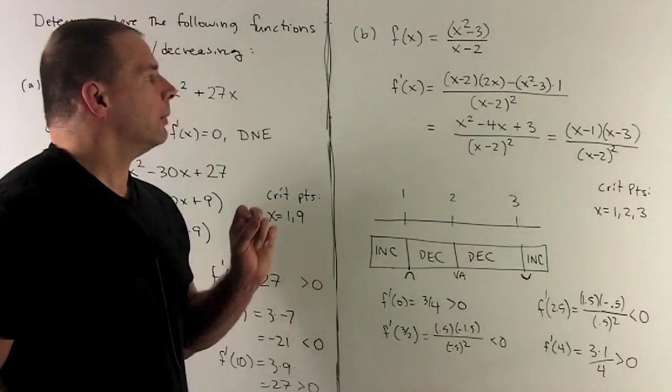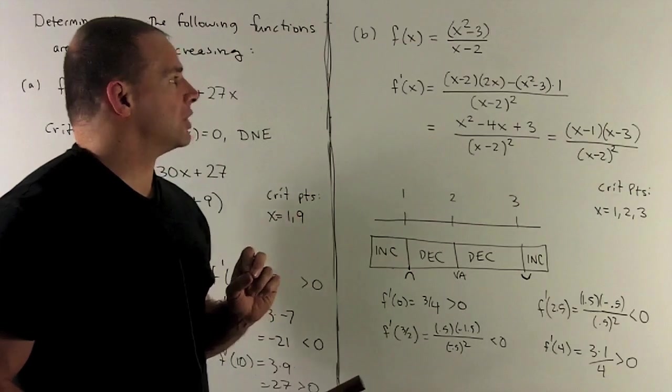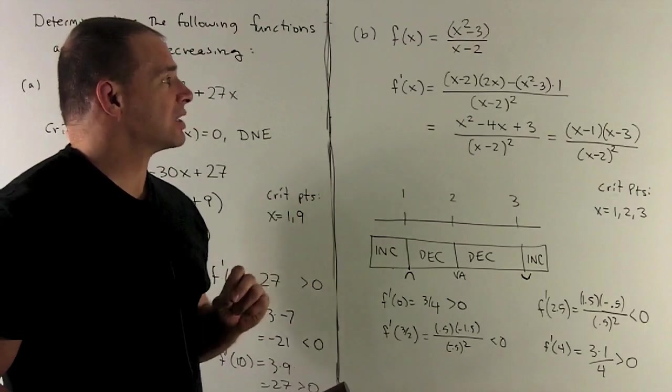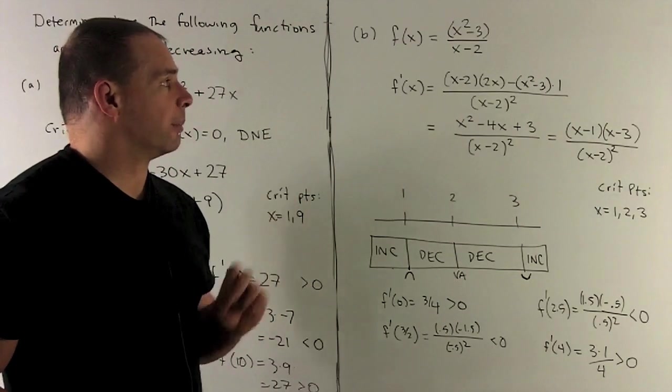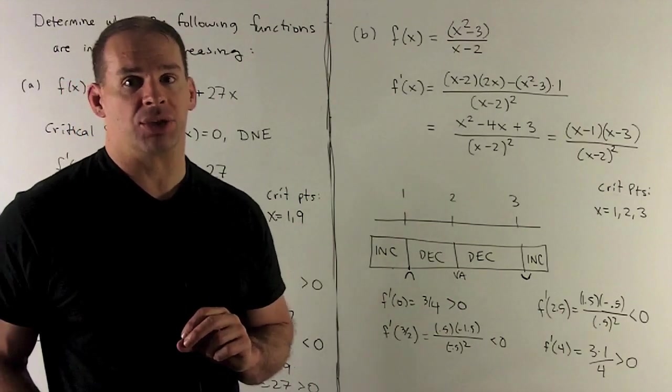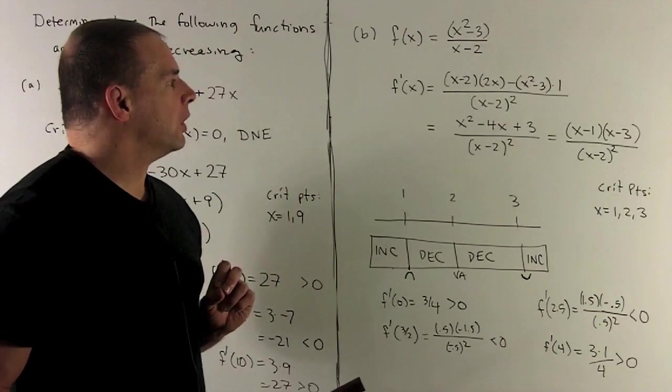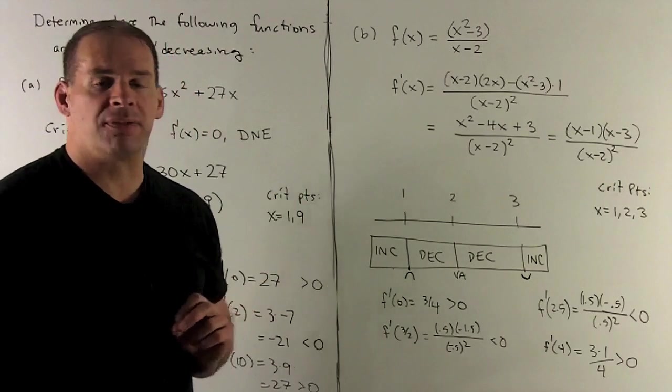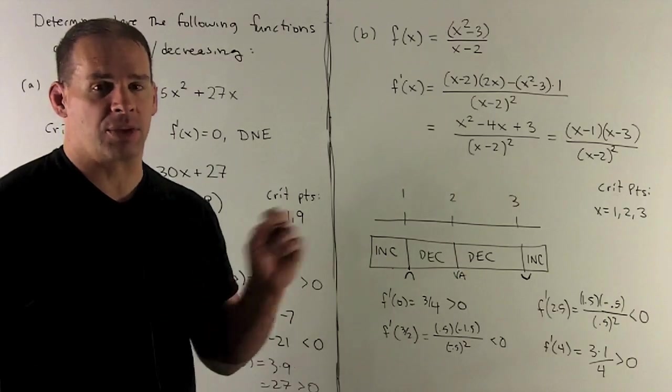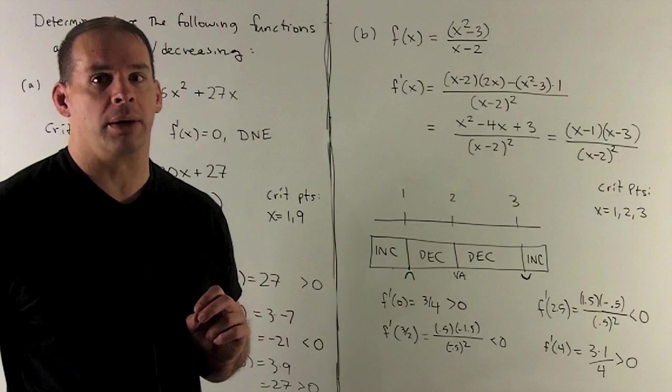So what do we get? I'm going to have x minus 2 times derivative at the top, which is 2x, minus x squared minus 3 times derivative at the bottom, which is 1. All over low squared, which is x minus 2 squared. Now, when we sort out the top, what are we going to get? We're going to wind up with x squared minus 4x plus 3. The top factors into x minus 1, x minus 3, and the bottom, I have x minus 2 squared.